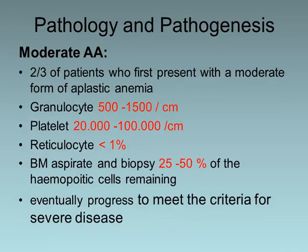Moderate aplasia: two-thirds of patients may present with moderate aplasia for the first time, in which the granulocyte count is usually between 500 and 1,500 per cubic millimeter, platelet between 20,000 and 100,000 per cubic millimeter, and reticulocytes less than 1 percent. Bone marrow aspirate and biopsy show 25 to 50 percent of hemopoietic cells remaining, but eventually they progress to meet the criteria of severe aplasia.